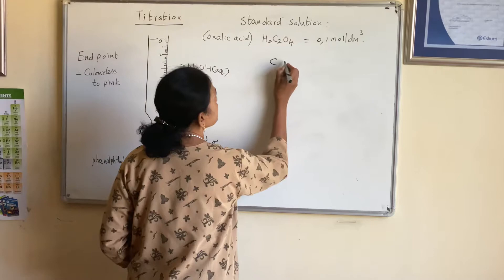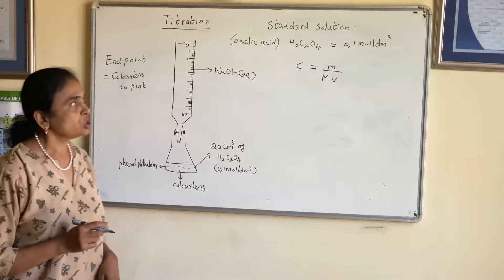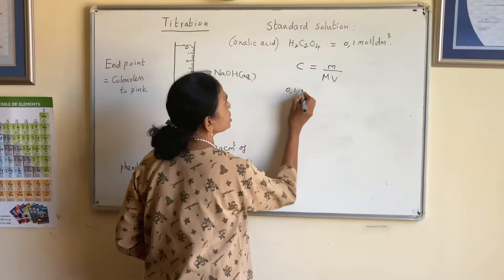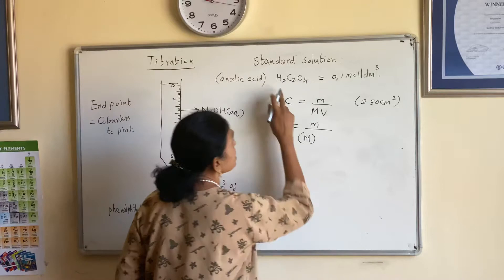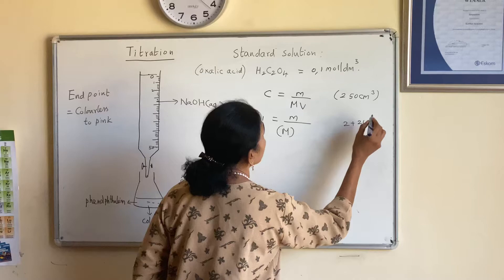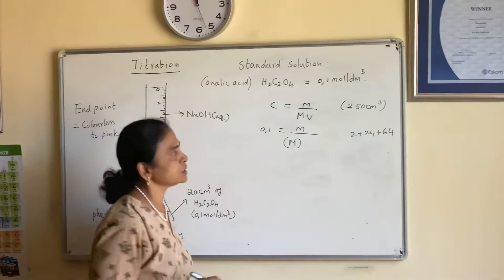To prepare a standard solution, we use this formula: C equals mass divided by molar mass times volume. If you want to prepare 0.1 mol per dm³ in 250 cm³, write down the mass and calculate the molar mass for oxalic acid. The molar mass is 2 plus 24 plus 4 times 16.